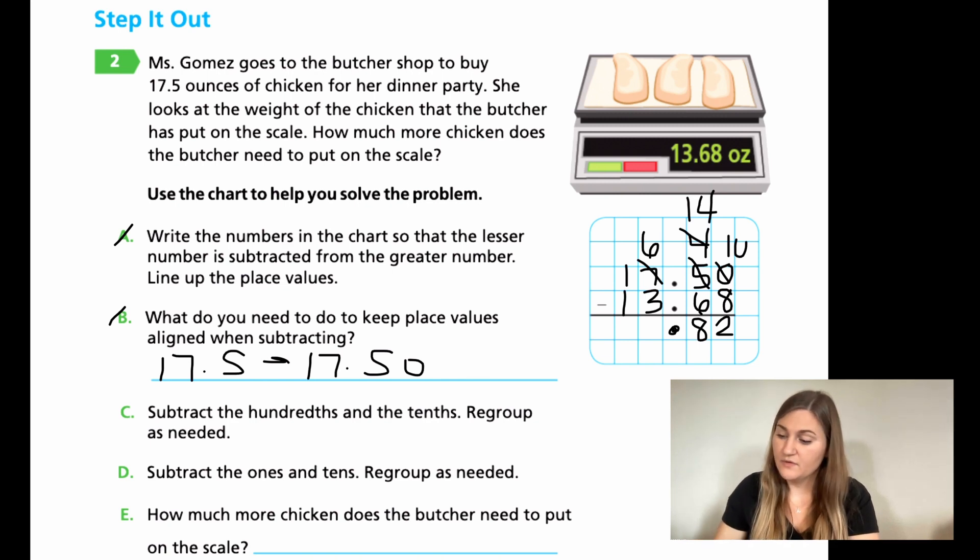Bring down the decimal. 6 minus 3, so I'm moving into the ones and tens now for D. 6 minus 3 is 3, and 1 minus 1 is nothing. You can leave it blank, or you can put a 0. Either one is correct.